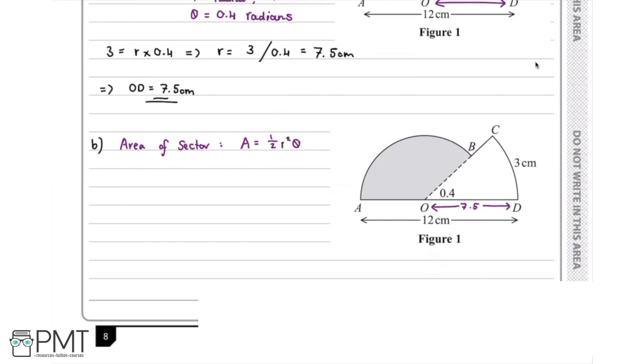Now we look at our diagram and see we're being asked to work out the area that I'm shading in yellow here. There's two things that stick out to me. We know that the total length from A to D is 12 centimeters, but we know that from O to D it's 7.5 centimeters. So we can now work out A to O.